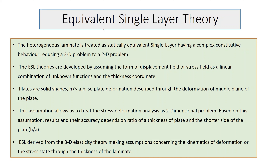Some basics have been given for the equivalent single layer theory. The laminate is called heterogeneous because it is made of lamina 1, lamina 2, and lamina 3. The material property of each lamina differs: one may be metal, another ceramic, and another polymer or any other material.